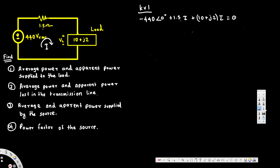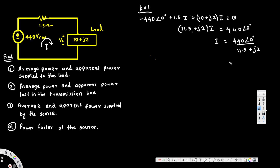Adding the resistances together gives (11.5 + j2)I. Moving the source term to the other side gives I = 440∠0° divided by (11.5 + j2). Calculating this gives us I = 37.7∠-9.9°. This is our current.